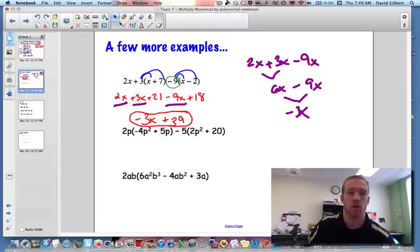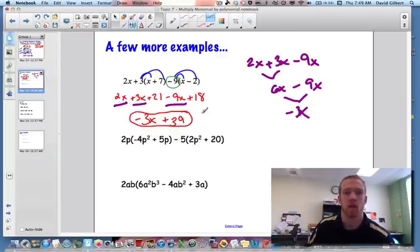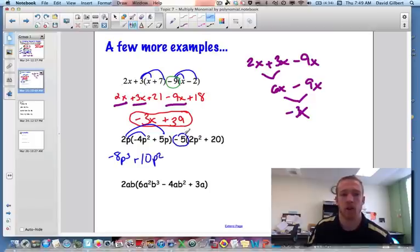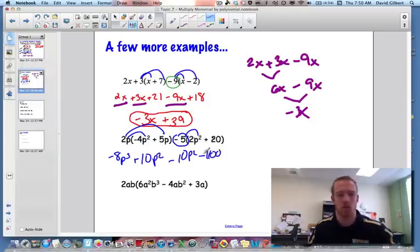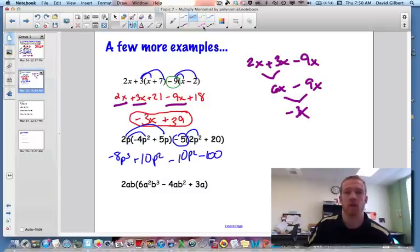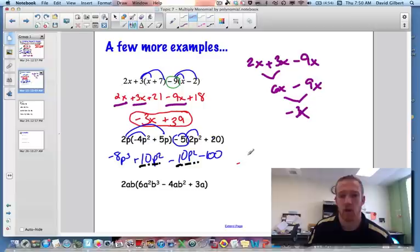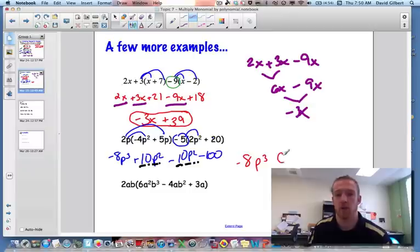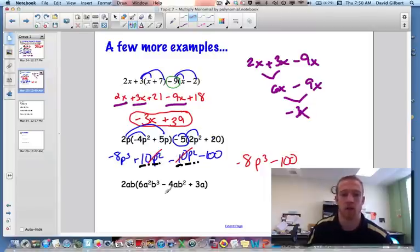Alright. So here I'm going to give myself a little bit more room there. Distribute the 2p times both things. So we have negative 8p cubed plus 10p squared. Negative 5 times p squared is negative 10p squared. Negative 5 times 20 is negative 100. Do we have any like terms? We've got to check. And yes, we do. We have p squared and p squared. So that's negative 8p cubed. Positive 10p squared minus 10p squared would just be 0p squared, but we're not going to write that. Minus 100. There's our final answer.